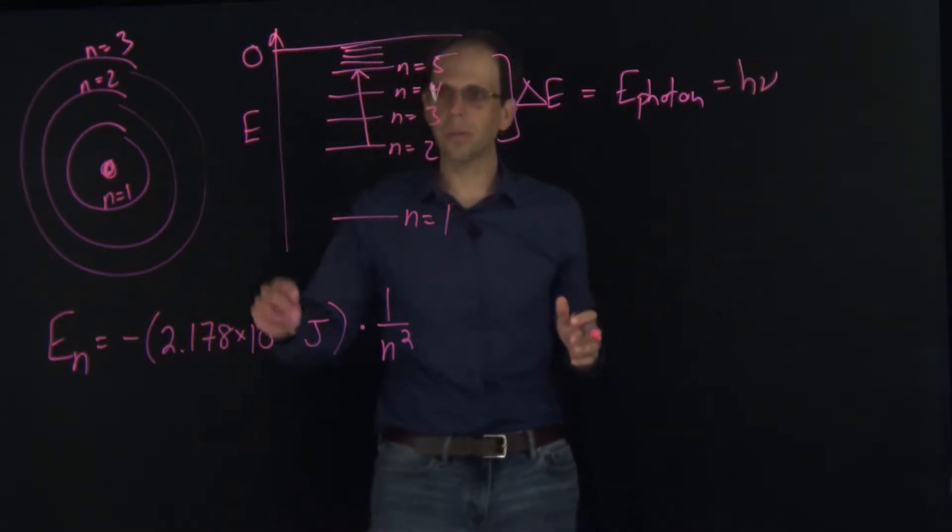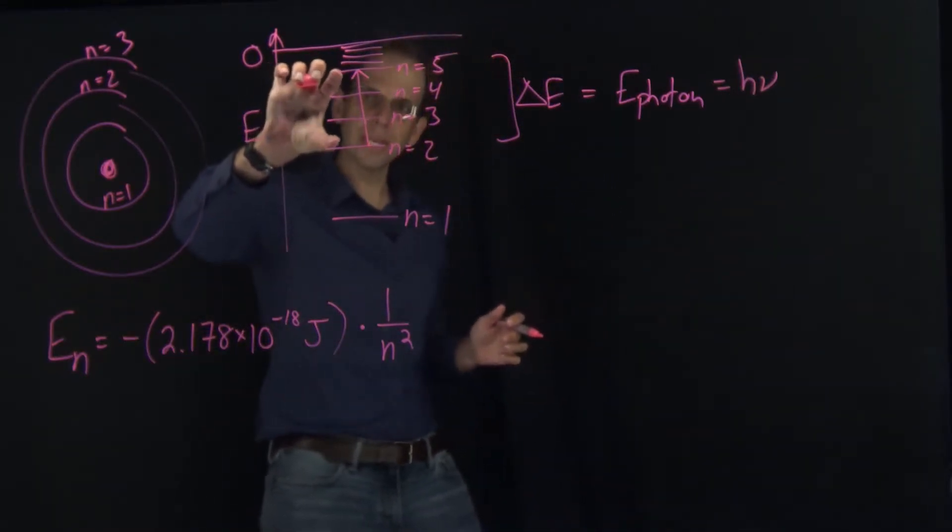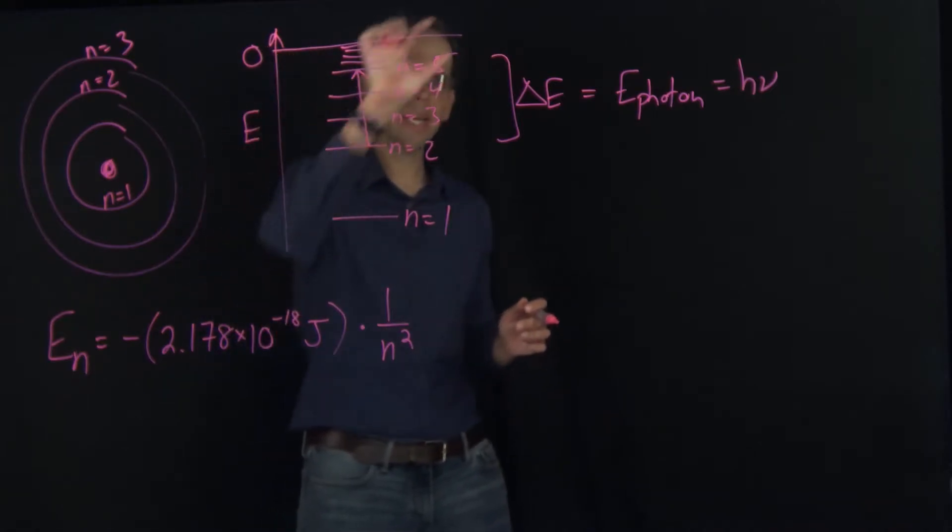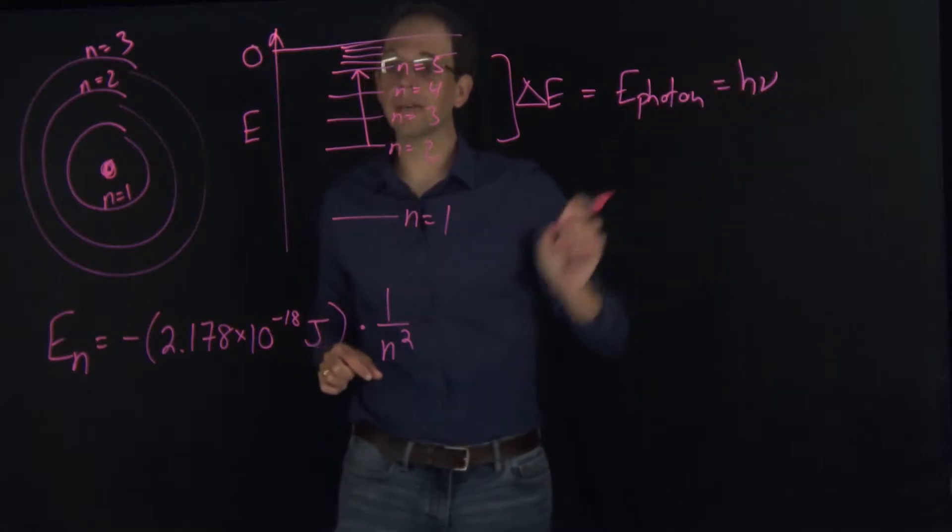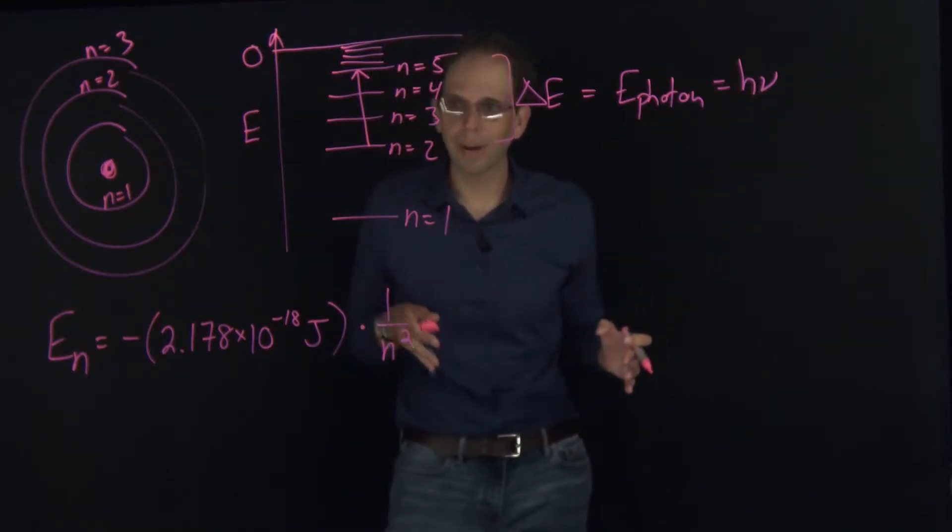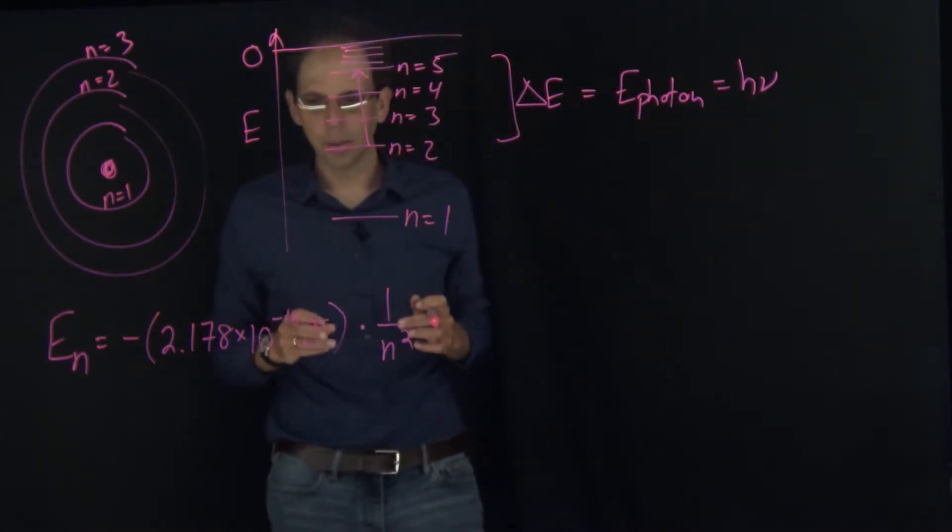What we want to do is calculate the energies of the two states we're interested in, take the delta E, and then set that equal to the energy of our photon to figure out what frequency or wavelength of light is going to be associated with that transition.